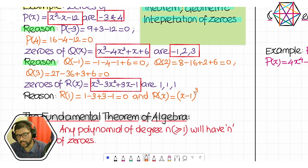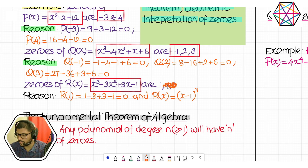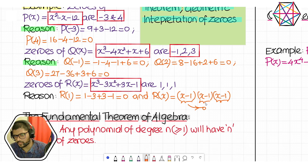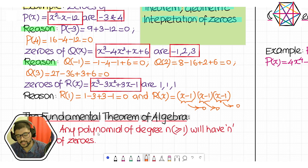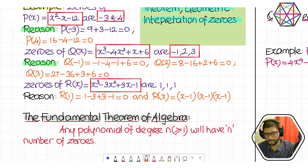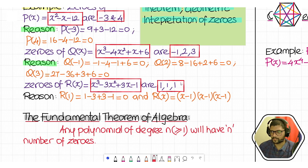The only number that will make (x − 1)³ zero is 1. If I replace x with 1, I get (1 − 1)³ = 0³ = 0. If I put 2, 3, or root 3 — anything except 1 — it will not work. So 1 is the only zero. Now, it is perfectly syncing with the Fundamental Theorem of Algebra: the degree is 3, therefore there are three zeros — 1, 1, and 1.